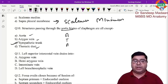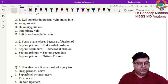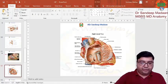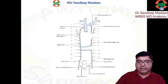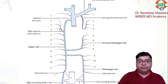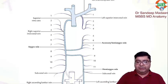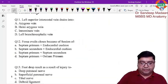Next question: the left superior intercostal vein drains into what? On both sides, the second, third, and fourth intercostal veins form the superior intercostal vein. On the right side it drains into the azygos vein, but on the left side there is a difference — it drains into the left brachiocephalic vein. So the answer is left brachiocephalic vein.